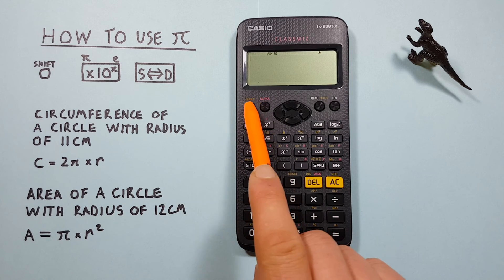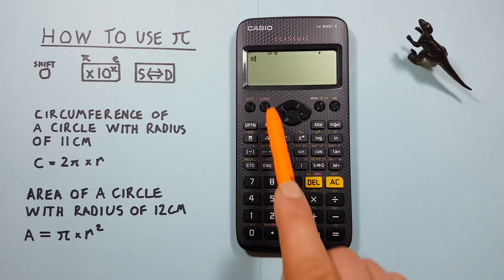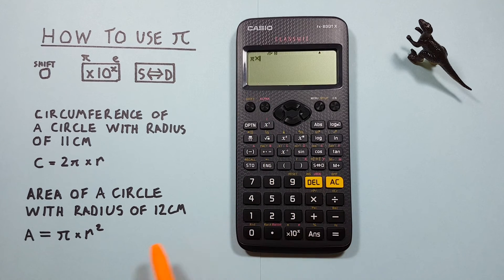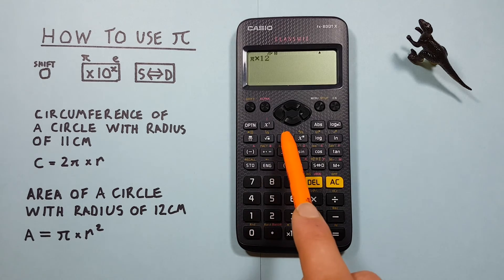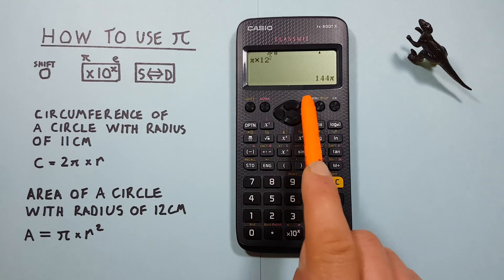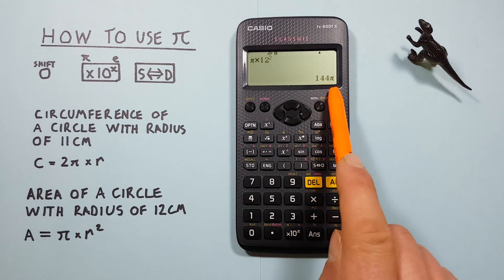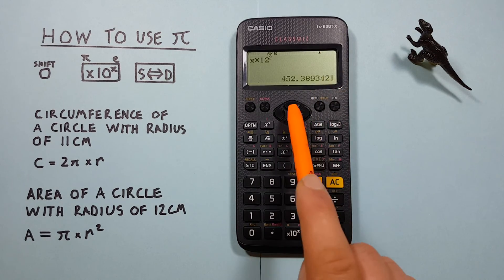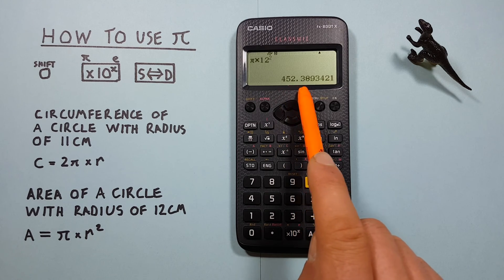Again, we start by placing the PI on our screen. Then times R, which was 12. And then we square that. And press equals. We see we get an area of 144 PI, which converts to 452.389 etc.